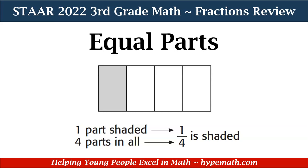So if we're looking for the fraction for the shaded part of this shape, then the answer would be one fourth is shaded. Because we have four equal parts, that makes up our whole — that is our denominator. And there's only one shaded part, so our fraction is one fourth.